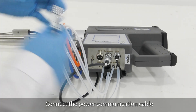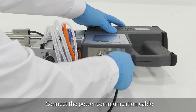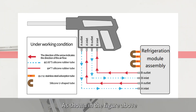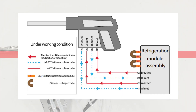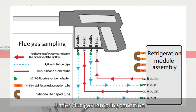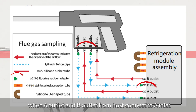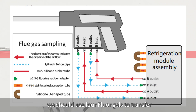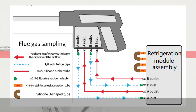Connect the power communication cable. Under flue gas sampling condition, there is only one difference: when connecting A-outlet and B-outlet from the host to A-inlet and B-inlet of the refrigeration module, you should use four fluor gel transfer sleeves. Everything else remains the same as before.